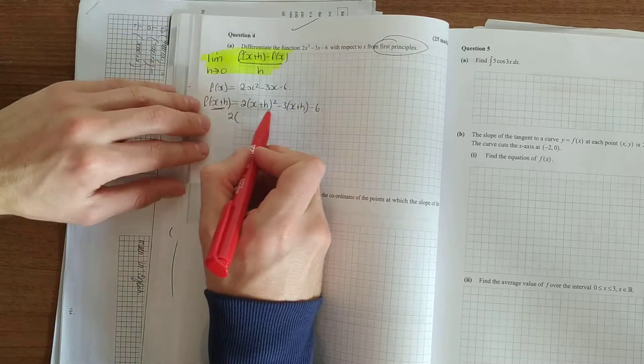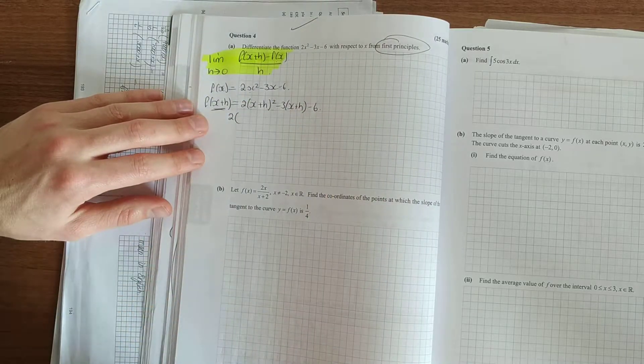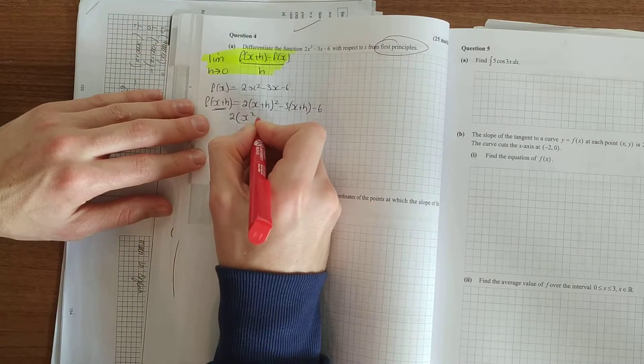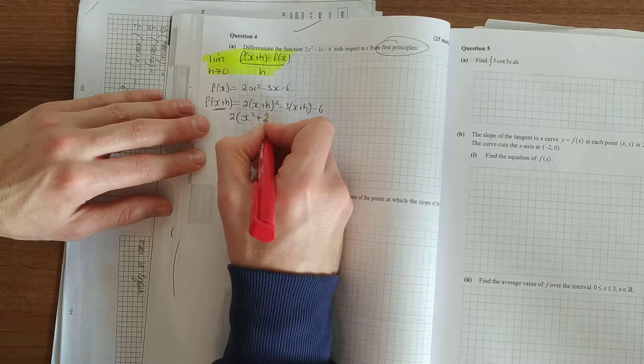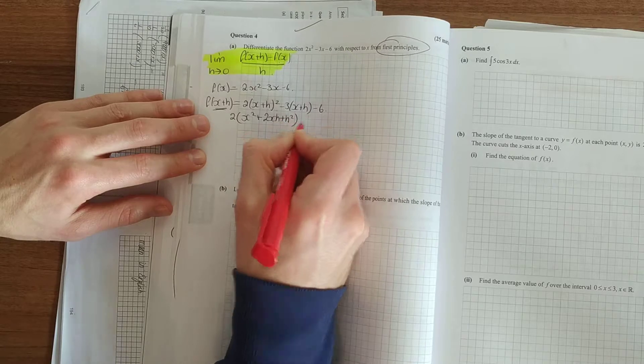And tidy it up. And write out that bracket twice if you like. Do not make silly mistakes squaring that out. Square the first, multiply the two together, xh, double it. Square the last.